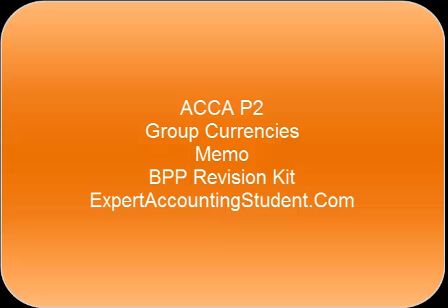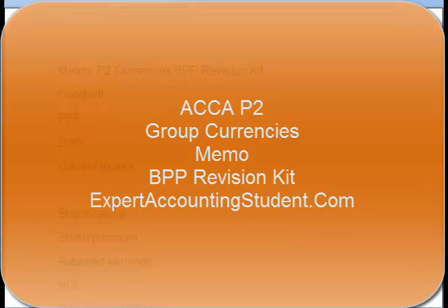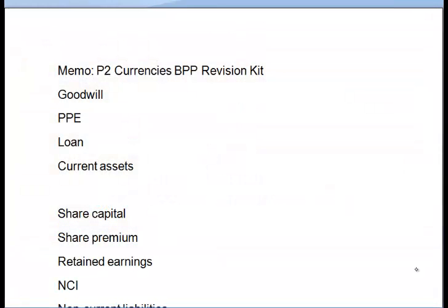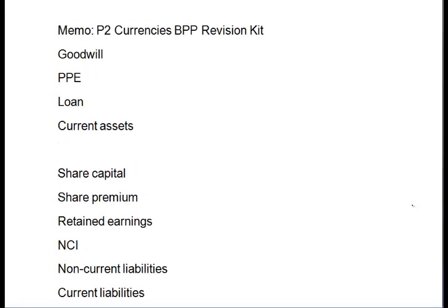Good morning ladies and gentlemen. This question is all to do with consolidating a foreign subsidiary company — it's a question called MIMO. I've set out a pro forma consolidated statement of financial position, with additional lines for goodwill as part of our non-current assets and the non-controlling interests as part of equity. This is the standard approach for all group questions.